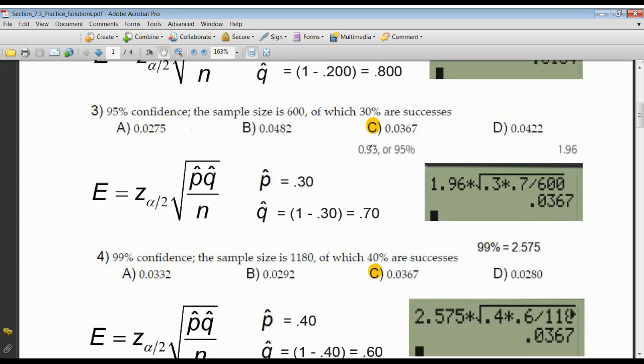Three doesn't change except that now the confidence level that you're looking for is 95%. The Z score associated with 95% is 1.96. Here, he tells me what P hat is. He gives it to me as a percentage. 30% of the sample were successful, were successes. So 30% as a decimal is 0.30. So Q hat is 1 minus that, 0.70.